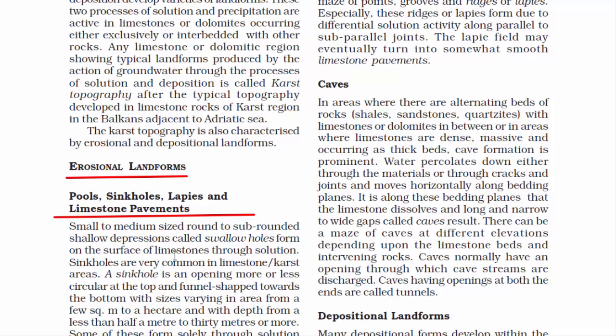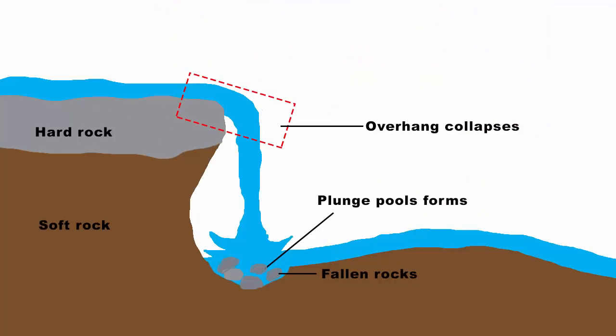Pools are also called plunge pools. Whenever you hear the word plunge pool, immediately think of a waterfall. When water flows over a waterfall it creates a plunge pool at its base. Due to the force of falling water, a depression is created at the base. Plunge pools are formed by the natural force of falling water.